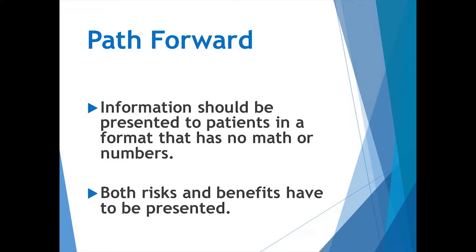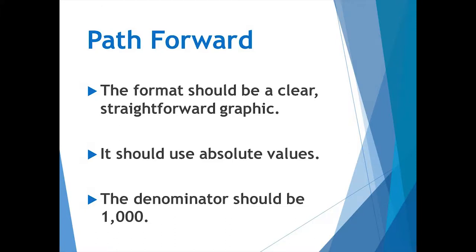What we know from the literature on shared decision making and decision aids is that information should be presented to patients in a format with no math or numbers, and that both risks and benefits must be presented so patients can understand what they should and shouldn't do based on their preferences and values. The format should be a clear, straightforward graphic using only absolute values, with a denominator of 1,000. Values like two out of 1,000, four out of 1,000, three out of 1,000 seem to resonate more quickly — these are conclusions from peer-reviewed journals, and our theater happens to fit that.